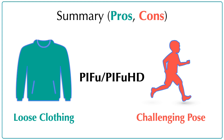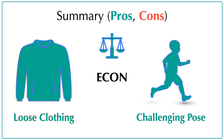In summary, without the guidance of an underlying body, implicit-based reconstructors typically fail for humans with unseen challenging poses. However, relying too much on the underlying body will reduce topological flexibility, causing artifacts for loose clothing. ECON combines the best of explicit parametric models and deep implicit functions, which makes it robust for both loose clothing and challenging poses.